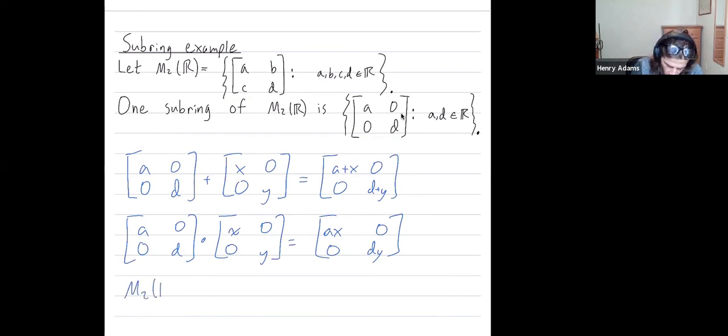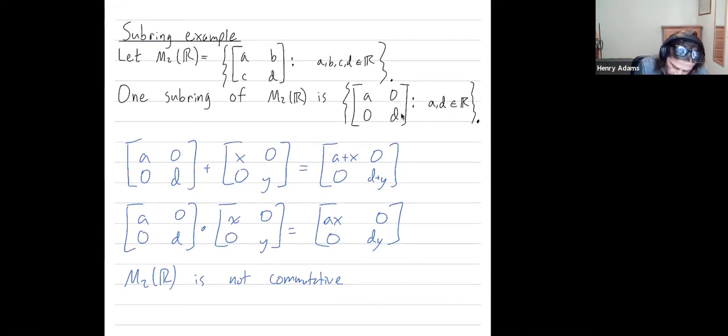Now, M to R is not a commutative ring. All rings are commutative under addition, but not all rings are commutative under multiplication. And that's what we mean by commutative ring, one that's commutative under multiplication. And it's not the case that 2x2 matrices commute. You might have a times b is not equal to b times a, if a and b are matrices.